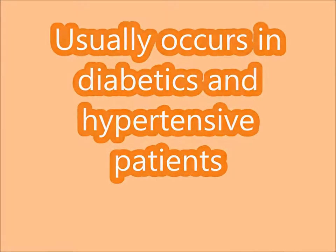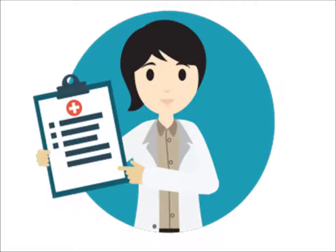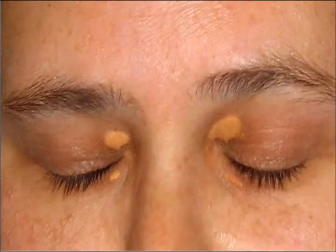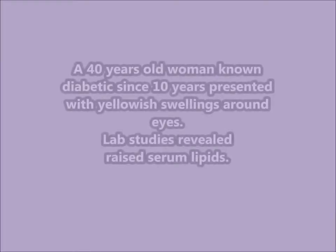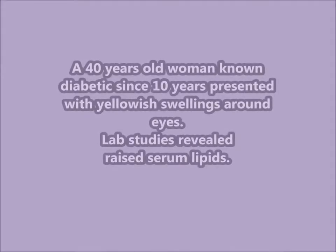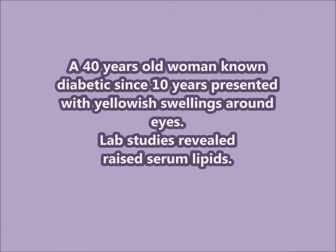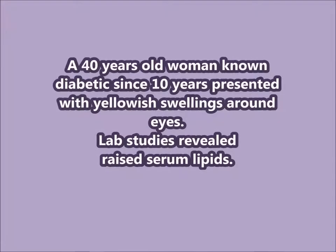Usually the patient presents with a complaint of yellowish swelling. The common site is around the eyes; hands or feet may also be involved. Like this patient — a 40-year-old woman, known diabetic for 10 years, presented with yellowish swelling around the eyes.